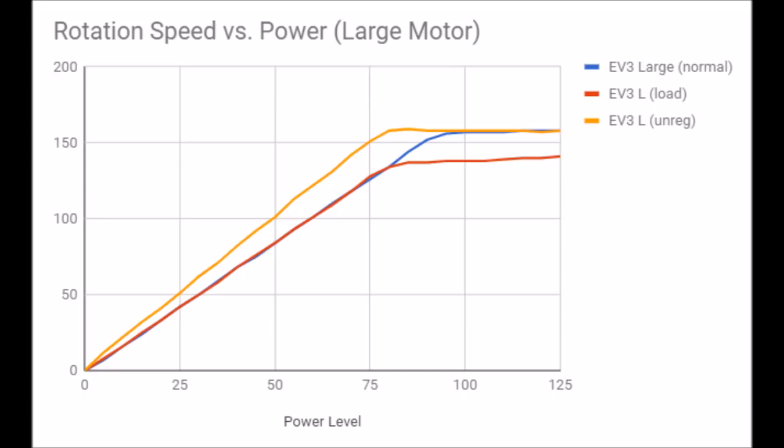First if we compare the red and the blue, the motor with the load on it was pretty much the same all the way up until about 80% power is where the loaded motor reached its maximum speed and it couldn't increase anymore. The EV3 large motor generally has a lot of torque, so for the most part it wasn't really affected by that extra load. Until it started to get to a higher RPM when the friction was greatest because the rotation speed was higher.